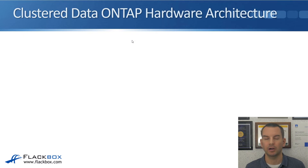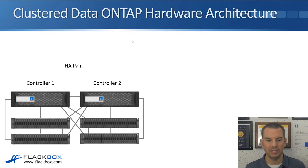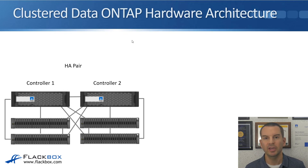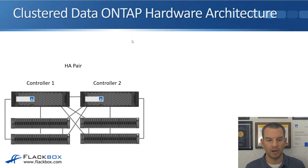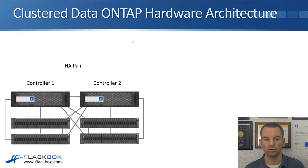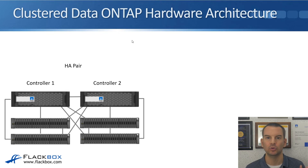Let's look at the hardware architecture in clustered systems. To begin with, it's really the same as a seven-mode system, which is not very surprising considering that both operating systems could run on the same hardware. We have an HA pair, exactly the same as in a seven-mode system — two controllers, Controller 1 and Controller 2. They're both connected to each other's disk shelves to give controller redundancy, and we have an HA connection between the two controllers.